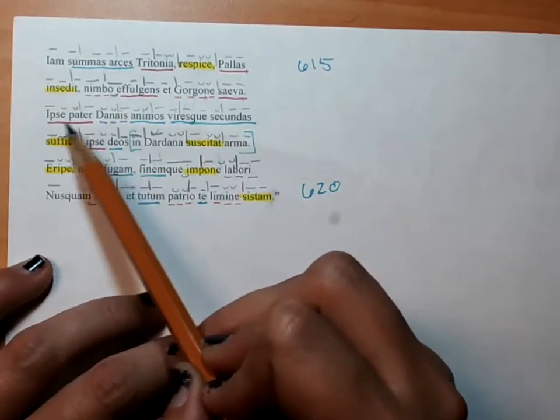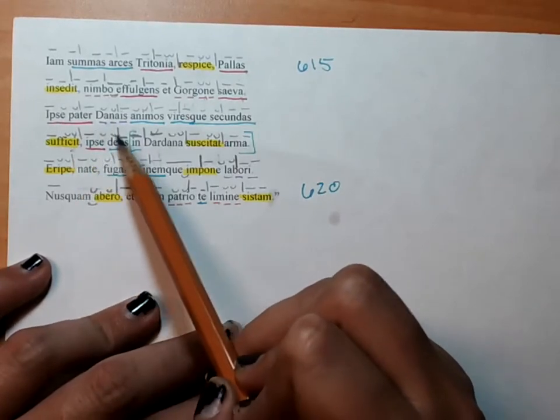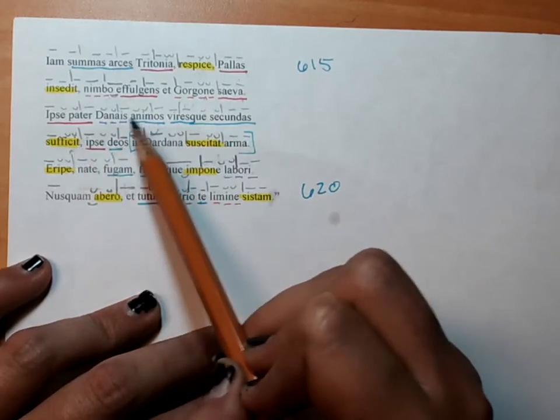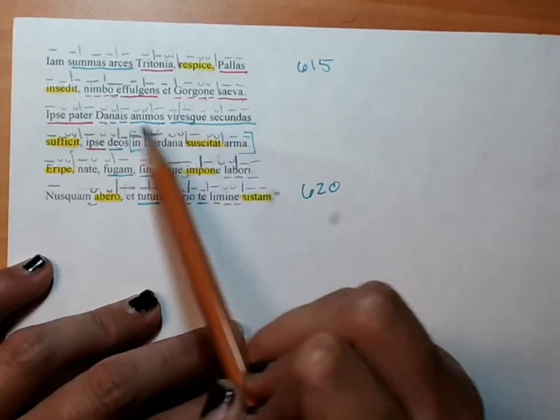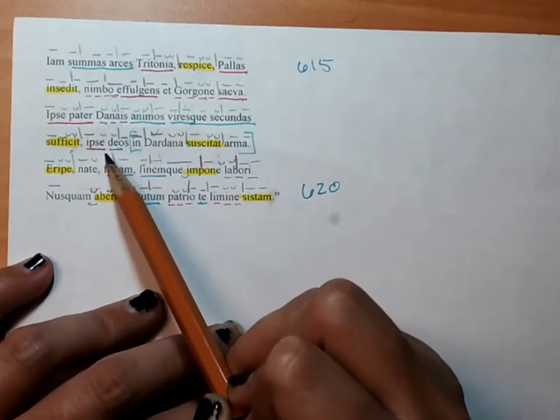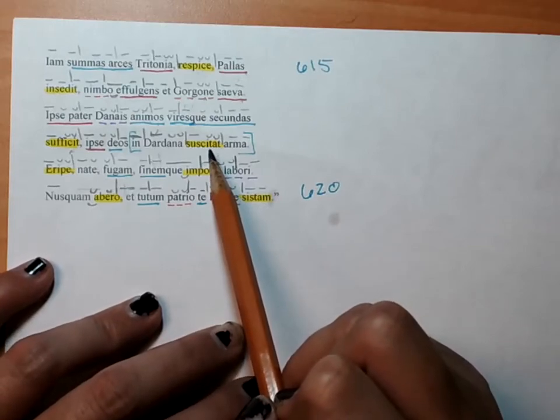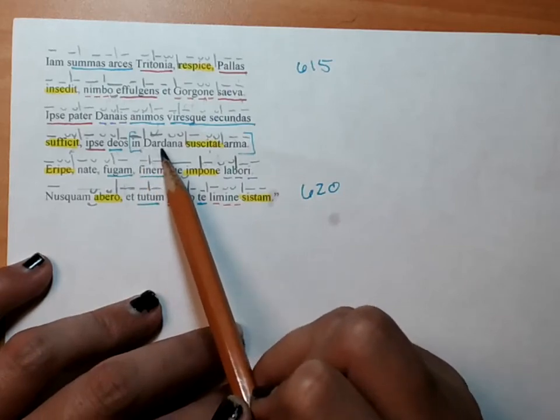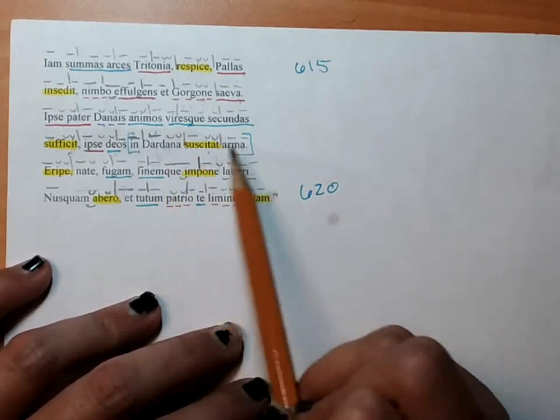The father himself has filled up the souls or has suffused the souls and the pleasant power for the Danaeans. He himself has stirred up the gods against the Dardan arms, the Dardanian arms, the Trojan weapons.